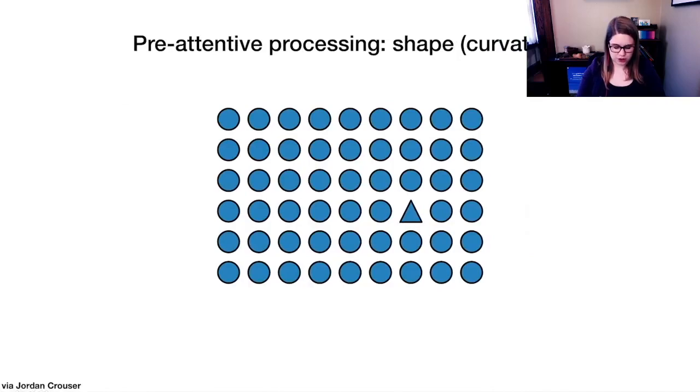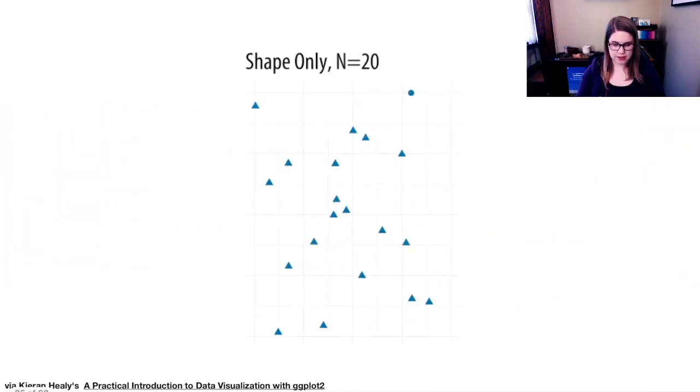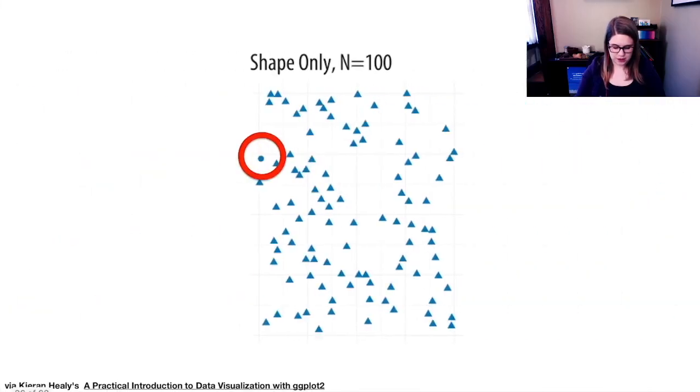We've got our shape or curvature again. With n equal 20, I think it's pretty quick to find it. With n equal 100, I've already called it out here. But I think it would take you longer to find the different shape with a larger number.